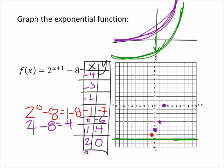So what would we get if we had a 3 right here? That'd be 2 to the power of 4, which is 16 minus 8 is 8, so 3, 8. Now we can see that point.